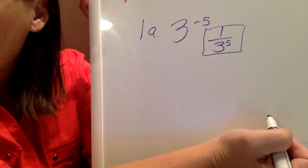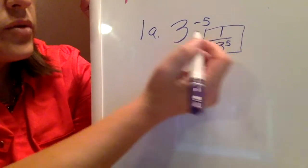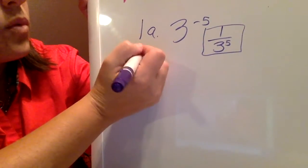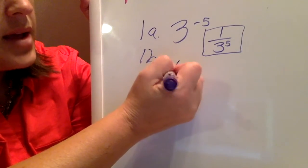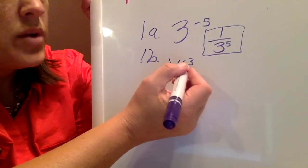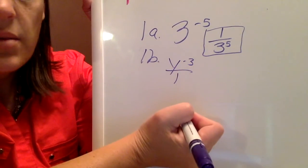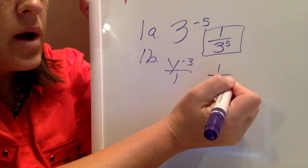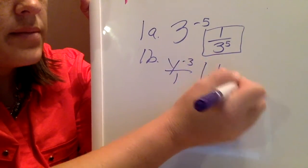So for number 1, letter a, it's just 1 over 3 to the 5th. For 1b, we have y to the negative 3. We have negative exponents, and we want to make them positive. So I'm just going to write down 1 over y to the positive 3. That's the answer.